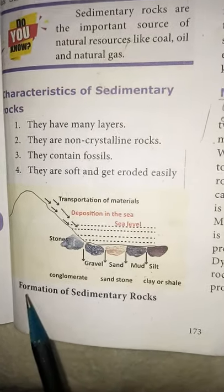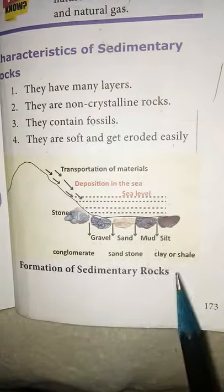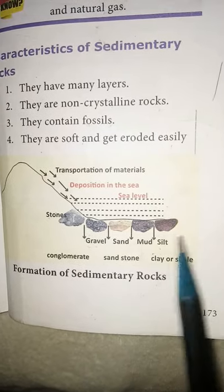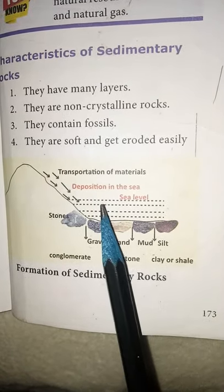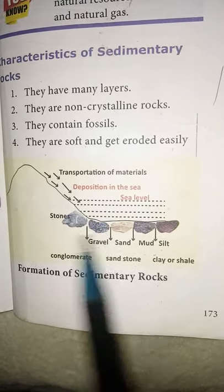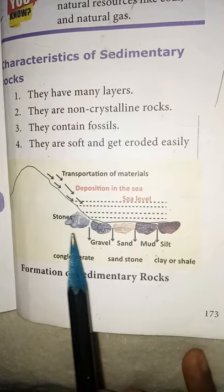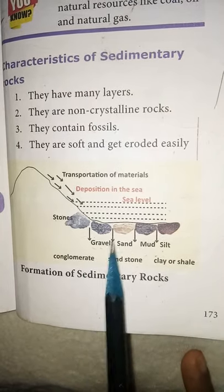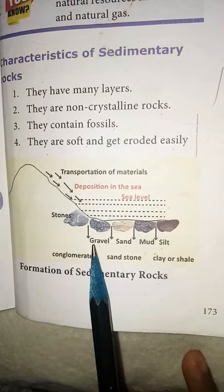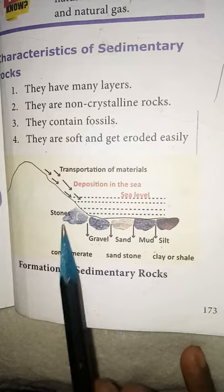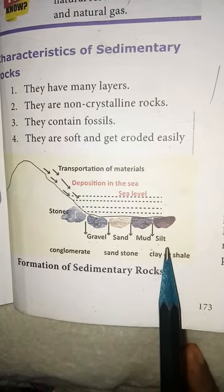Look at this — formation of sedimentary rocks in the seabed. Deposition in the sea, transportation of material, sea level. These are the sediment materials forming layers: stone, gravel, sand, mud, silt.